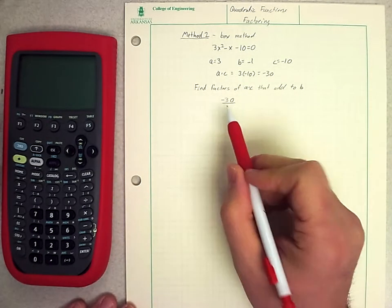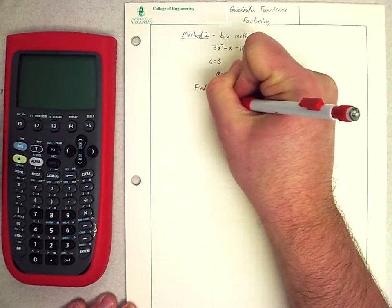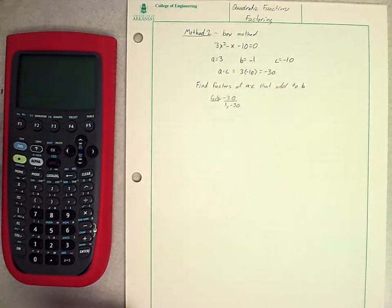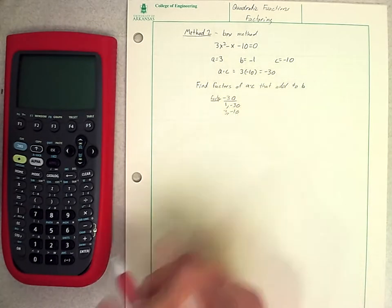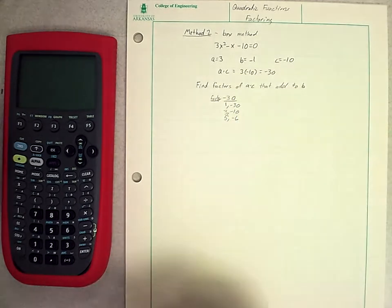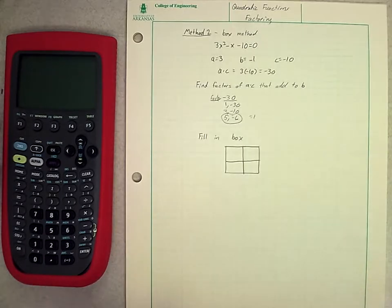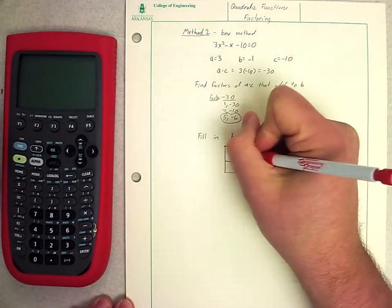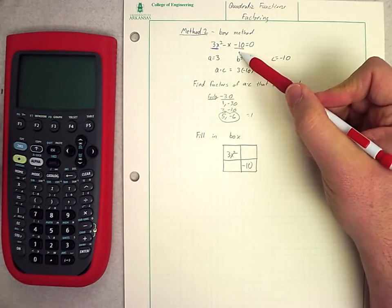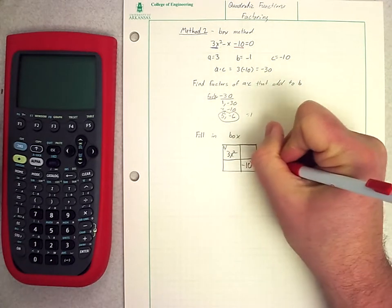Now what they ask us to do is find factors of a·c that add up to b. So for our case, we're trying to find factors of -30 that add up to -1. So maybe I can start by doing 1, -30. I know that's not going to get me there quickly. 3, -10. I skipped 2. But 5, -6. So that equals 1. So they would tell me to use the factors 5 and -6. And now the reason this is called the box method is because that's the next part we're going to fill in.